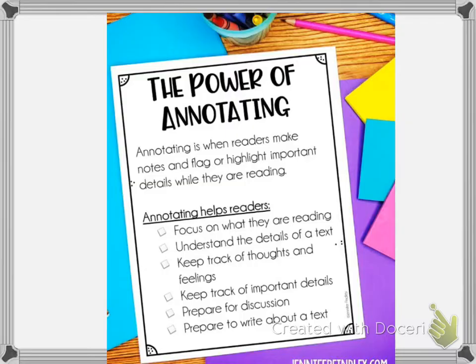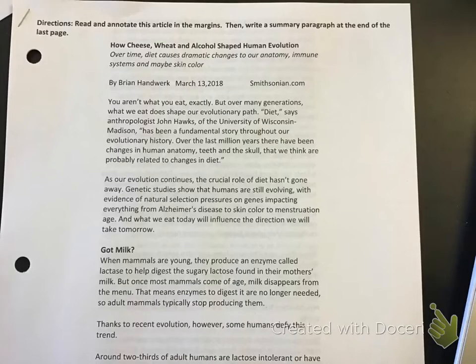Let's look at the article that I gave you today to annotate. This says 'How Cheese, Wheat, and Alcohol Shaped Human Evolution.' I'm going to start reading it and take some notes in the margins, possibly highlight some words.